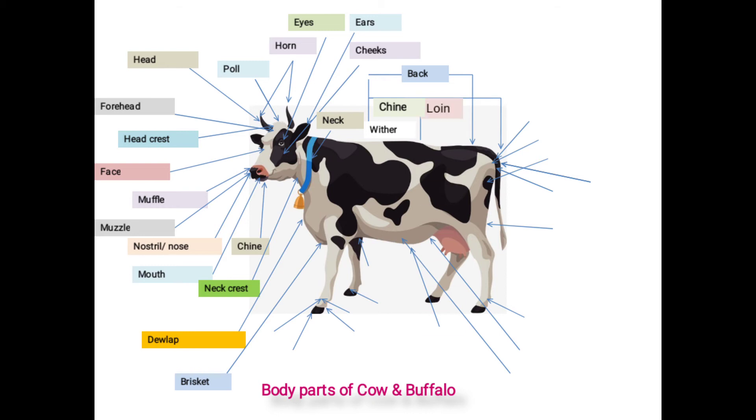Next one is loin: a triangular portion between chine and sacrum called as loin. Then hull of the flank: the triangular depression just below the loin on both sides called as hull of the flank, where the respiration rate is checked per minute. Then hip bone: the raised bone of hull of the flank is termed as hip bone.